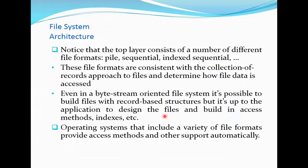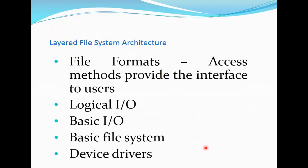The file system architecture starts where the user can see, and everything else is hidden and handled by the file system. The top layer consists of a number of different file formats, consistent with the collection-of-records approach, and determines how file data is accessed. Operating systems that include variable file formats provide access methods and other supports automatically, so the user doesn't have to worry about how the file is being accessed — you simply reference your file by name and the file system takes care of the rest. The file system gives access methods to logical input/output, basic input/output, and device drivers.